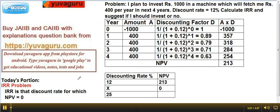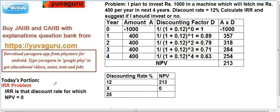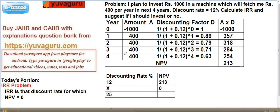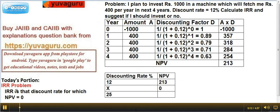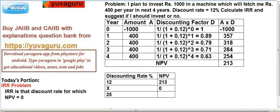Hi friends, let's solve a problem on IRR today. The theory of IRR and NPV is explained in a separate video, so we will solve the problem directly. IRR is that discount rate at which NPV is equal to 0. The discount rate can be the cost of funds or the market rate. So let's look at the problem.